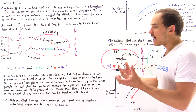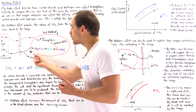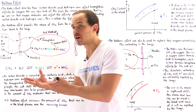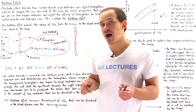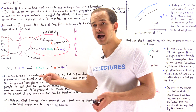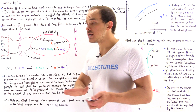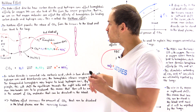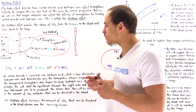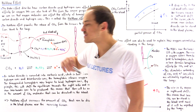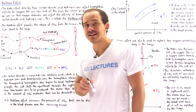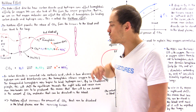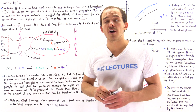Once inside the red blood cell, we need to convert the carbon dioxide — a nonpolar molecule — into a polar form, namely bicarbonate, so that we can dissolve it in the blood. A special enzyme called carbonic anhydrase combines carbon dioxide and water to form carbonic acid, which then dissociates into H+ ions and bicarbonate ions.